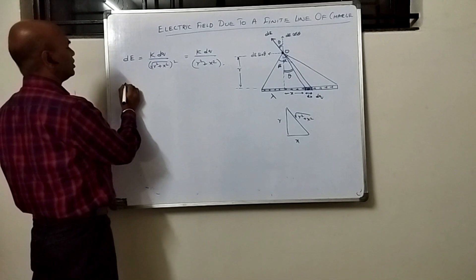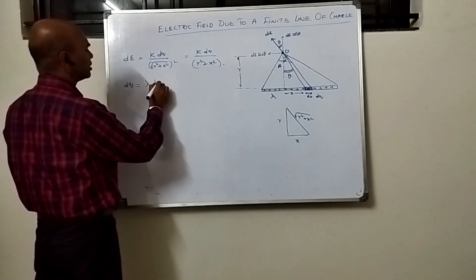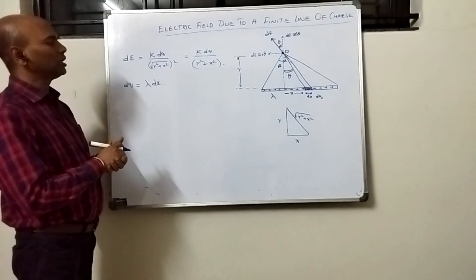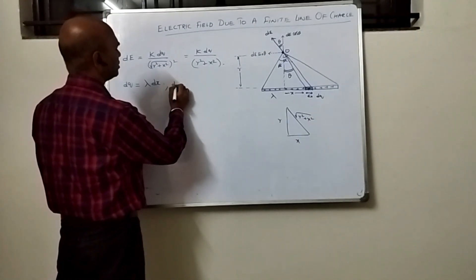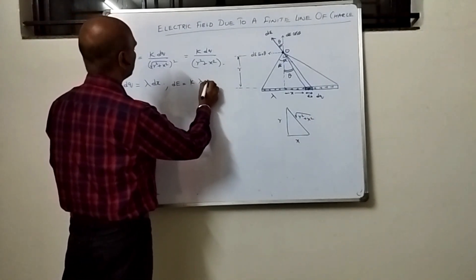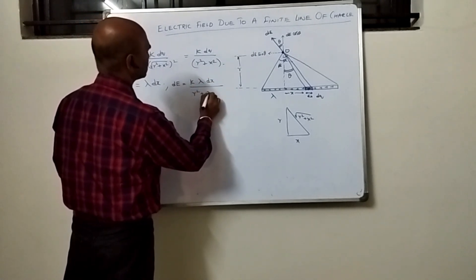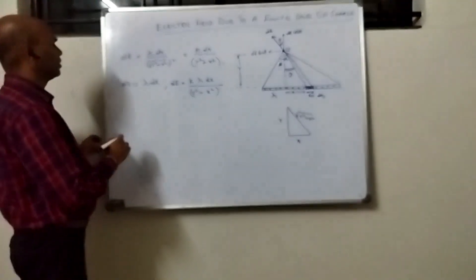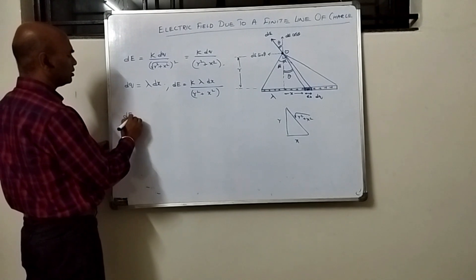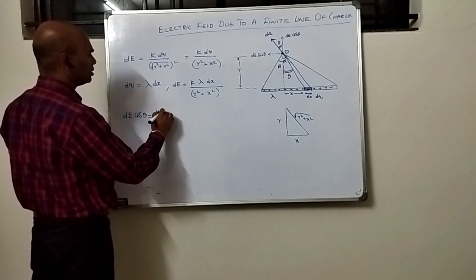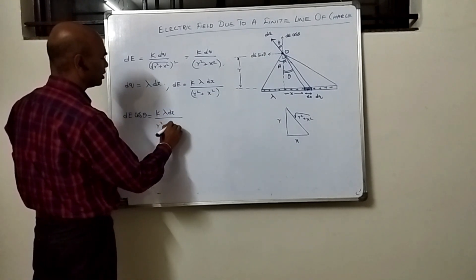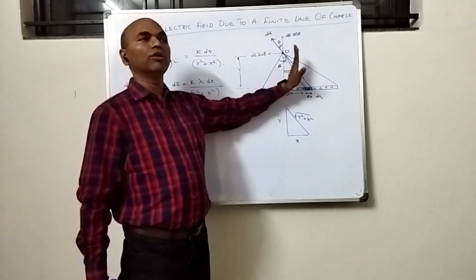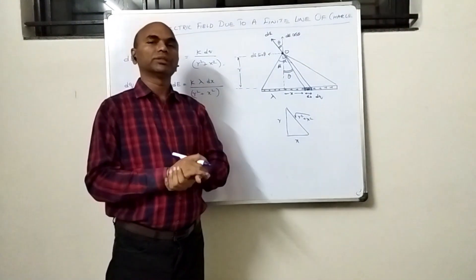Since lambda is the linear charge density and DX is the length of the element, DQ equals lambda·DX, which is the charge of the element. So DE becomes K·lambda·DX divided by (R squared plus X squared). The component DE·cosθ is therefore equal to K·lambda·DX divided by (R squared plus X squared) multiplied by cosθ. This is the component of electric field due to this element along the perpendicular direction.